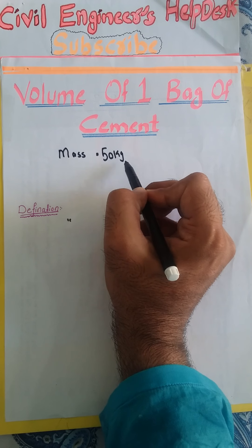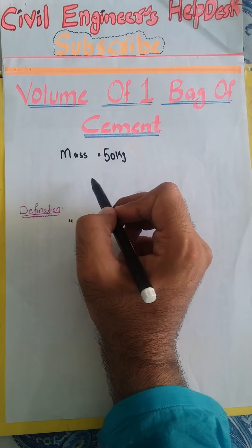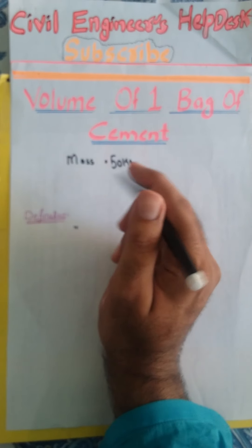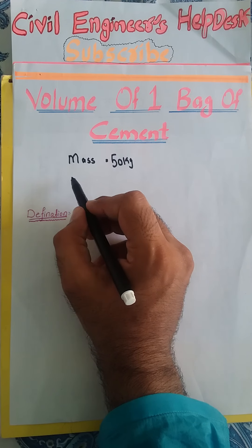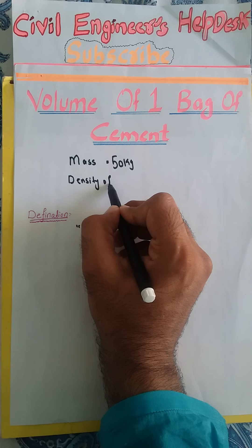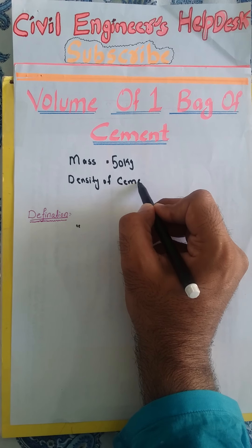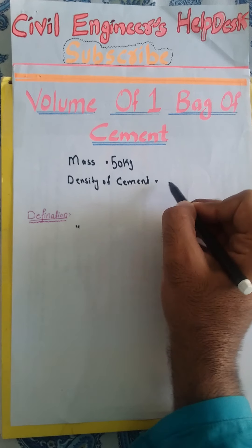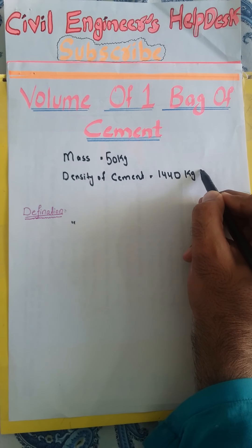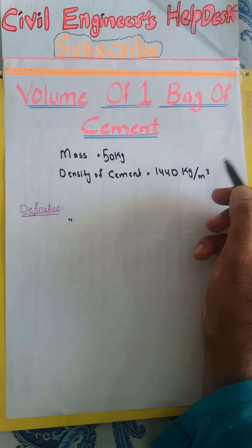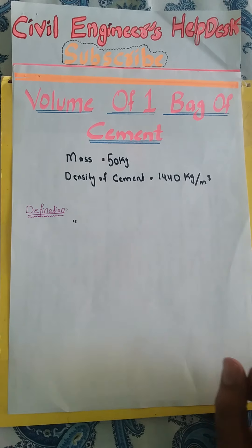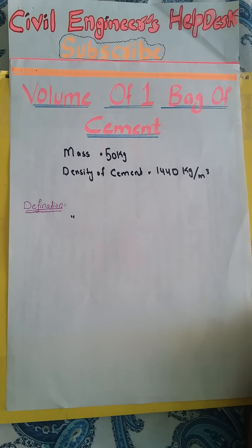You know that for one bag of cement, the mass will be 50 kg — one cement bag contains 50 kg of cement. Another thing you must know is the density of cement. The density of cement is 1440 kg per cubic meter. These two things are very important for the calculation of one bag of cement.